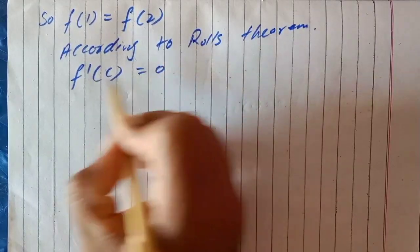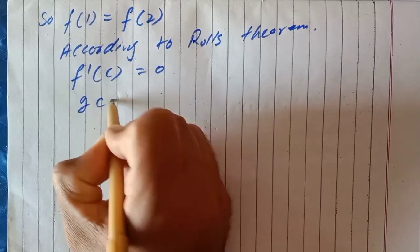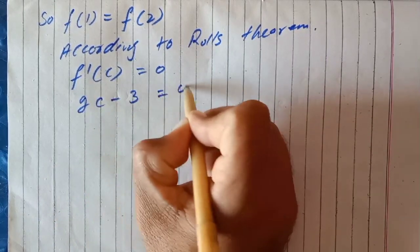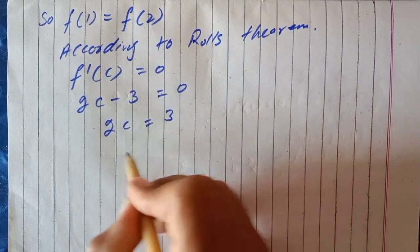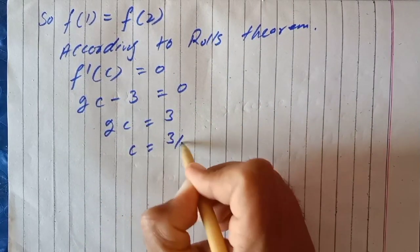f'(c) = 0, where 2c - 3 = 0. Therefore 2c = 3 and c = 3/2.